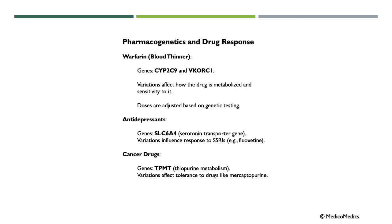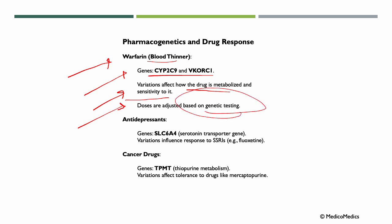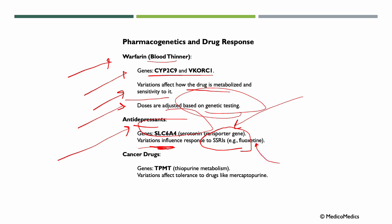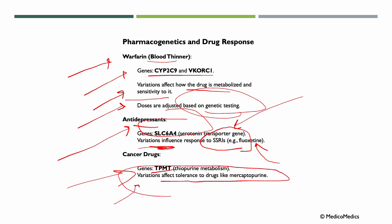Genetic testing can help us adjust medications to make them safer and more effective. For example, warfarin, which is a blood thinner — depending on genetic variation, it will affect how the drug is metabolized and the individual's sensitivity to it, so we can adjust doses based on their genetic profile. For antidepressants, the gene SLC6A4, a serotonin transporter gene, influences the response to selective serotonin reuptake inhibitors like fluoxetine. In cancer drugs, the gene TPMT and its variations can affect tolerance to drugs like mercaptopurine.